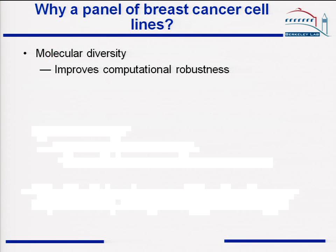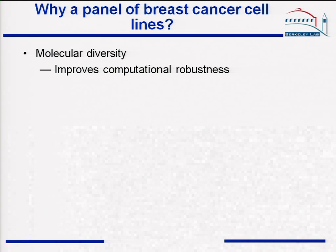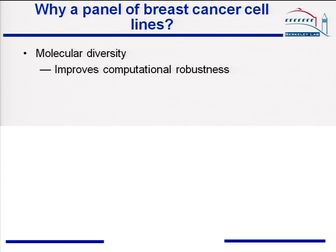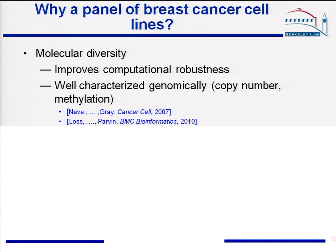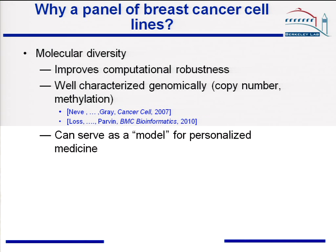First, going back to why we use the panel of breast cancer cell lines: because it leads to molecular diversity. Molecular diversity is very desirable because it improves the computational robustness. The cell lines we have been using are well characterized genomically in terms of copy number and methylation, and this also serves as a model for personalized medicine.